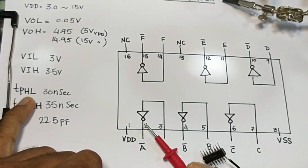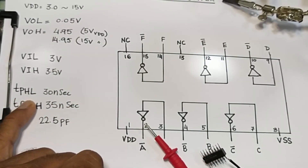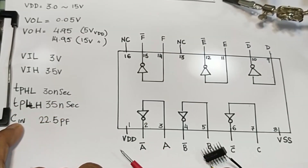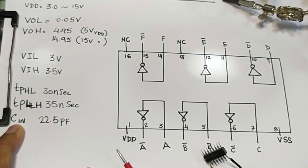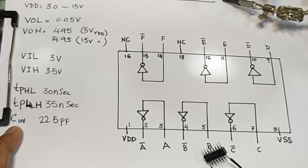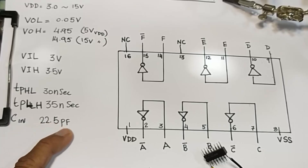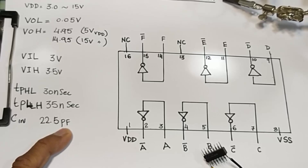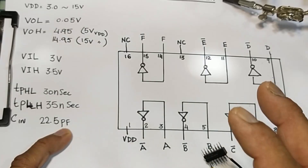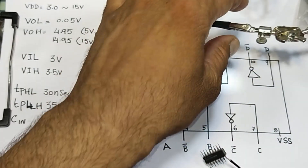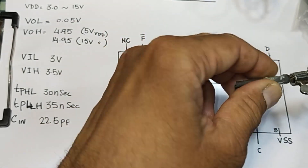Propagation delay: tpHL (high to low) is 30 nanoseconds, tpLH (low to high) is 35 nanoseconds. Cin — input capacitance — is 22.5 picofarads. This is a very important feature in CMOS ICs because at the gate there must be capacitance.